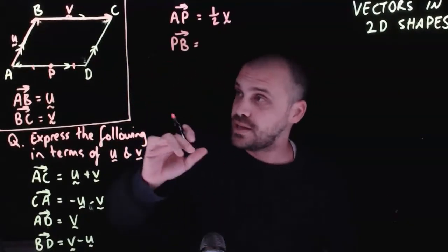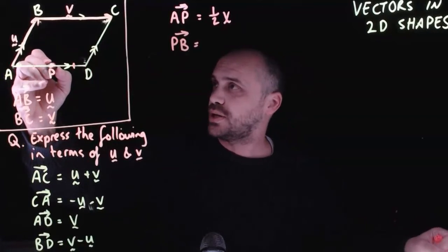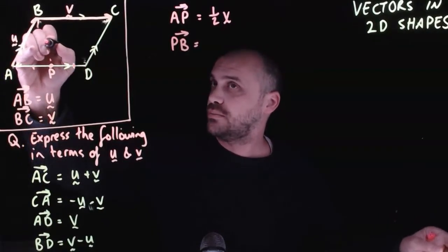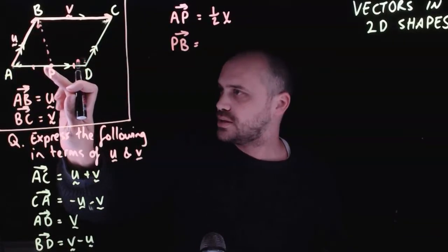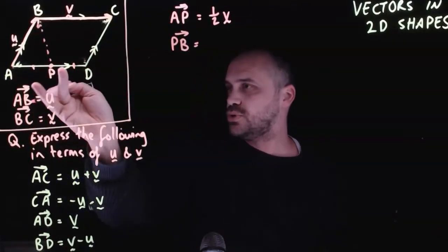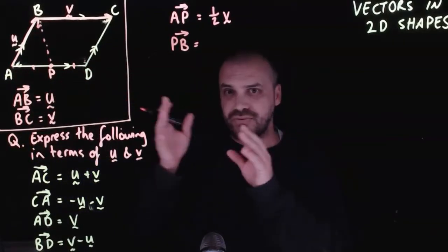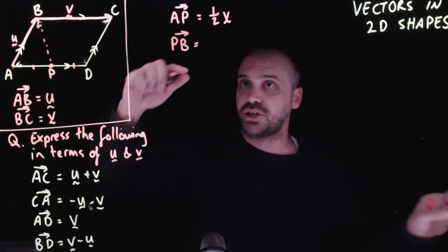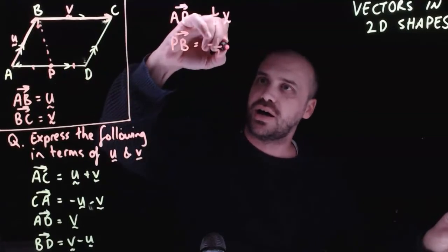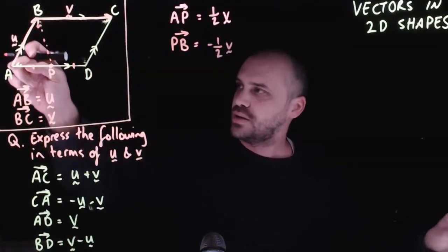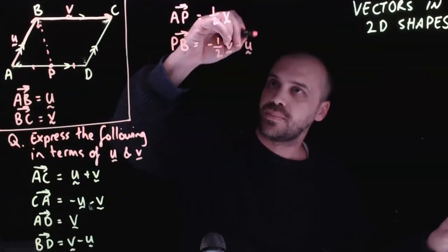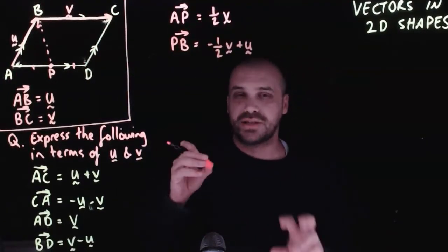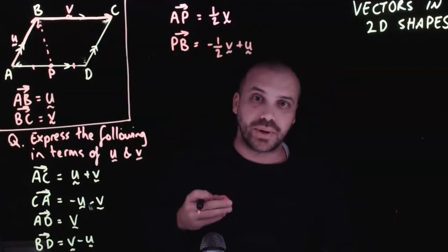Now, if we wanted to do vector PB, we're going from vector P to vector B like that. To get there, we go from here to here, which is moving halfway of vector V, but in the negative direction. So negative half V and then up here U. And that will be our answer.